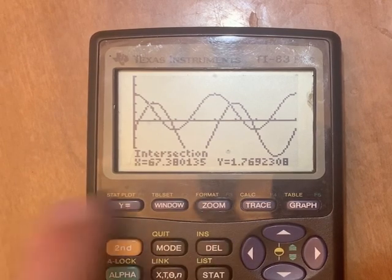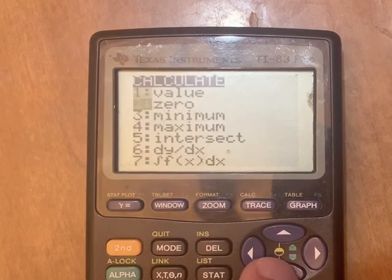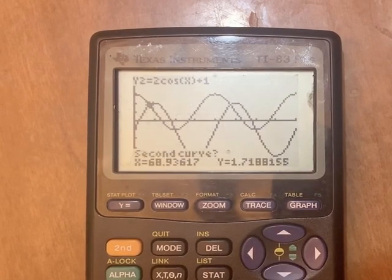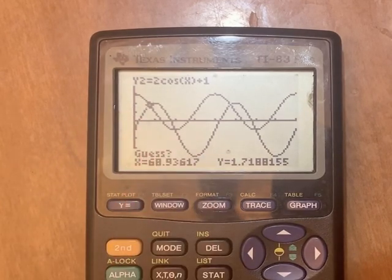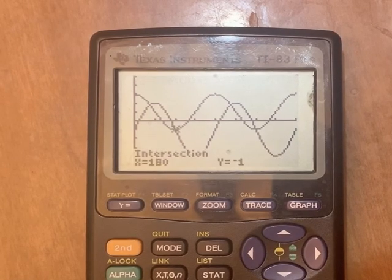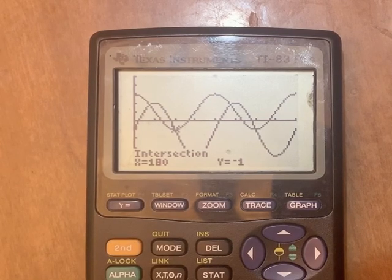So anyway, write that one down. To find this intersection, hit second calc, go down to intersection, and again hit enter for first curve, enter for second curve. And either use your arrow keys to move close to that, or you can type a number. I said it was close to 180, right? So let me type that. Turns out it was actually exactly 180. And so that's kind of cool.